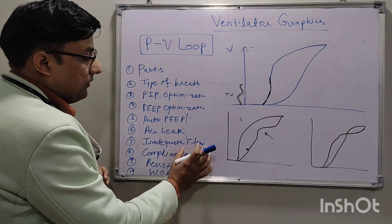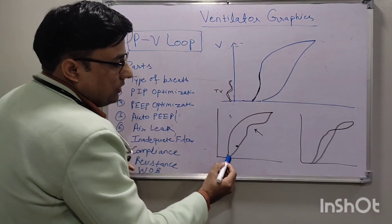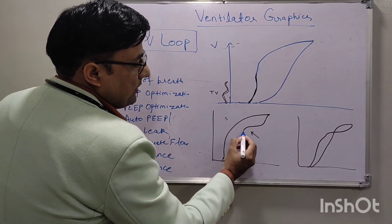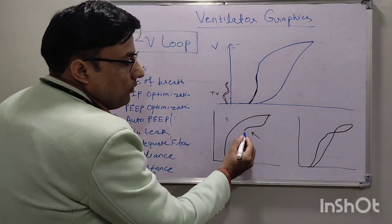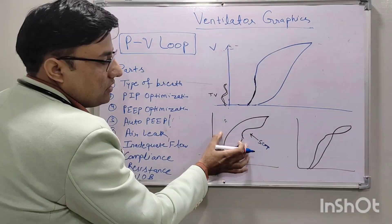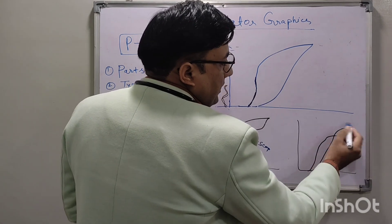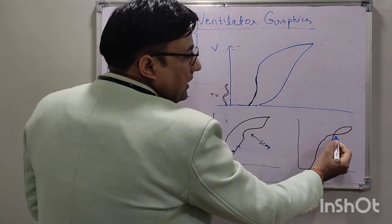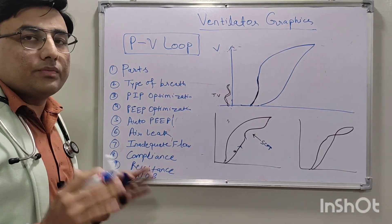We can also assess flow adequacy. If inspiratory flow is inadequate, a scooping pattern will be seen on the inspiratory curve in the PV loop — because the baby will try to gasp. If flow is very much inadequate, it can appear like a figure-8 appearance, as the baby tries to inhale more flow. Both patterns indicate inadequate flow, and we need to increase the inspiratory flow.